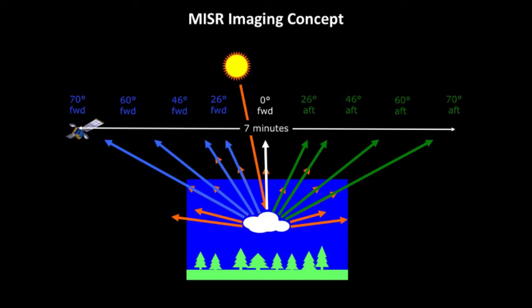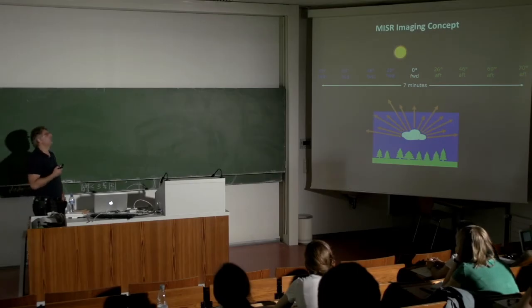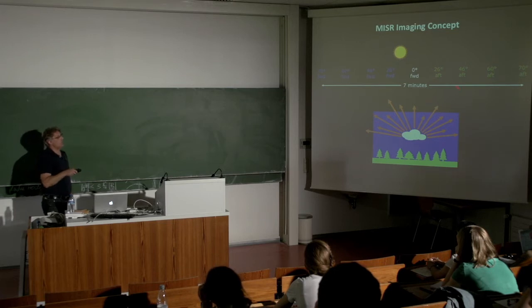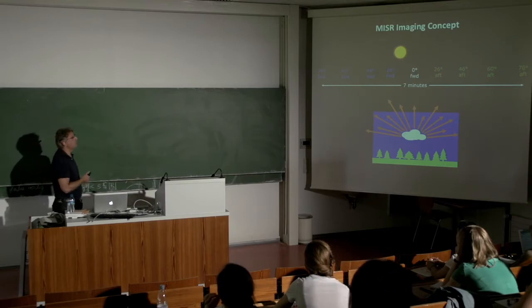The time difference between cameras is not linear — sometimes it's half a minute, sometimes a minute or a little more. The strength of the instrument and the information content comes from how the radiance, the brightness, varies with angle.